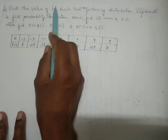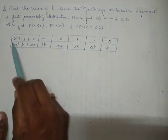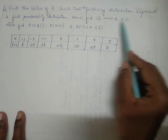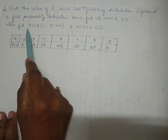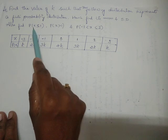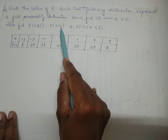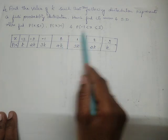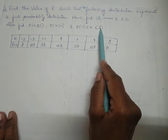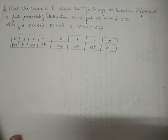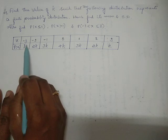First we have to find the value of k such that this given distribution is a finite probability distribution, then find the mean and standard deviation using the formulas. Also find P(X ≤ 1), P(X ≥ 1), and P(X lies between −1 and 2). We have to solve this problem — first they are asking us to find the k value.